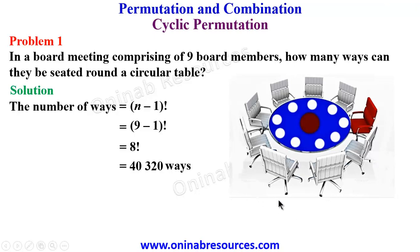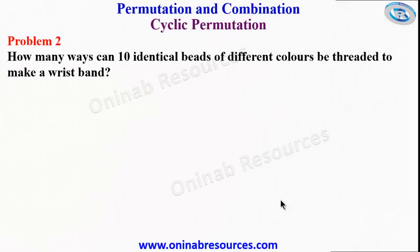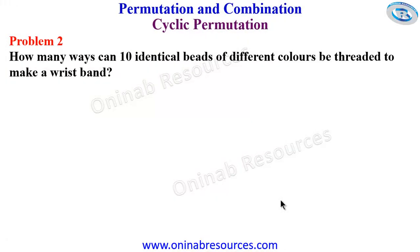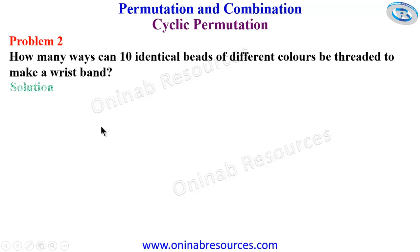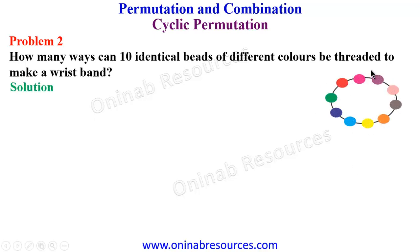That's all for problem 1. We then go to problem 2. How many ways can 10 identical beads of different colors be threaded to make a wrist band or bracelet? In our solution, this is the type of permutation of arranging 10 beads of different colors around a thread or ring.